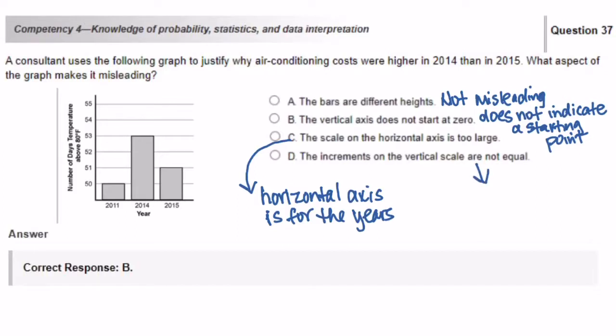And for Part D, the increments on the vertical scale are not equal. Well, they are equal. It goes from 50 to 51 to 52. So it's increasing by one unit or one degree for every increment. So we're back to answer choice B, which is the one that is misleading in this problem.